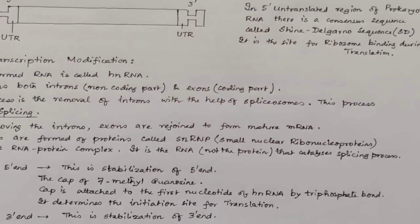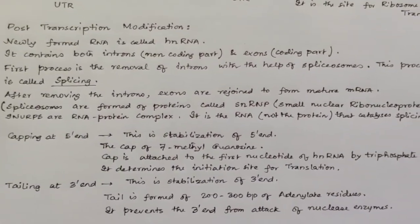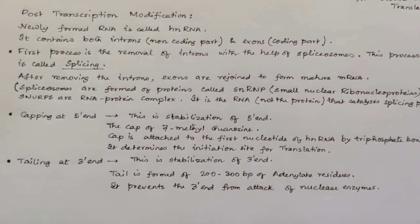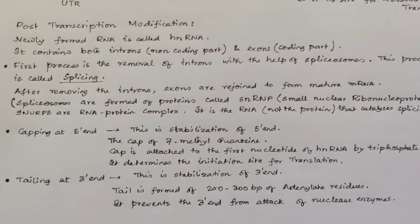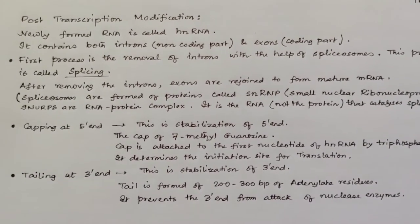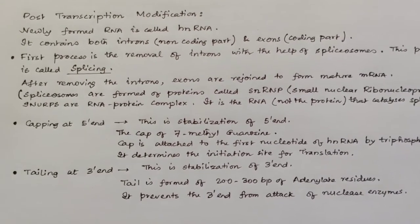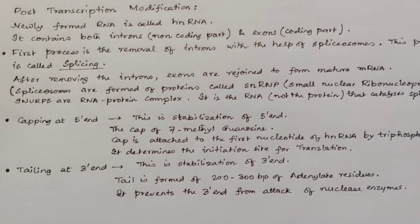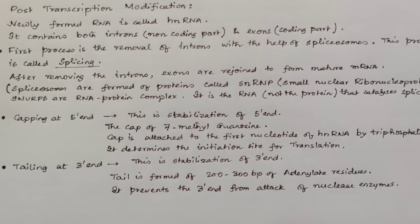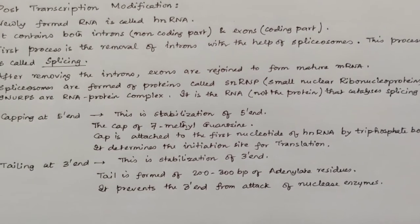After transcription, there is going to be some modification: post-transcription modification. The newly formed RNA is called nascent RNA, or hnRNA, or heterogeneous nuclear RNA. It contains both introns, which are the non-coding part, and exons, which are the coding parts.